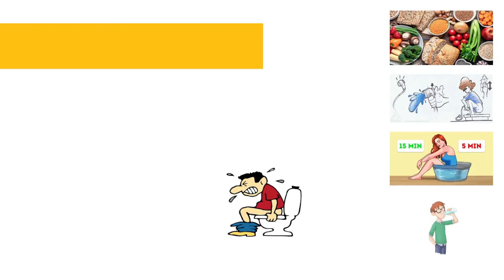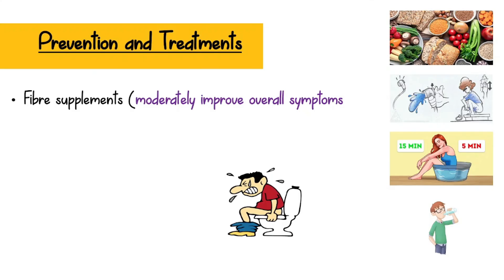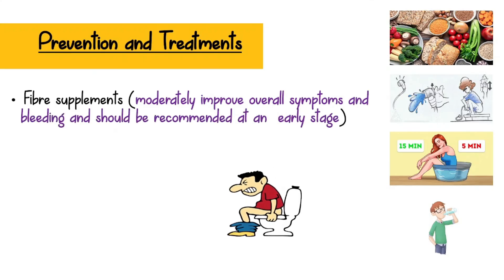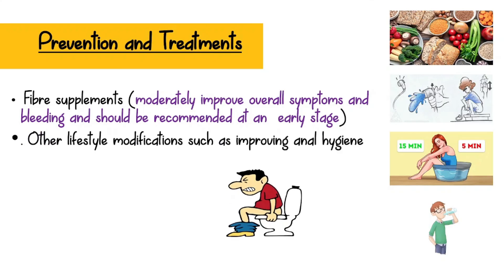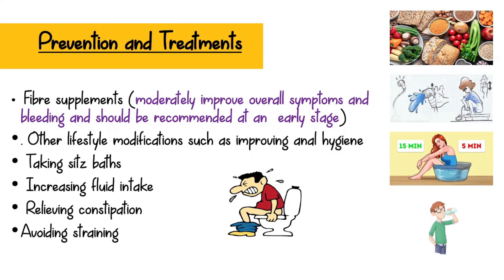Prevention and treatments: fiber supplements moderately improve overall symptoms and bleeding and should be recommended at an early stage. Other lifestyle modifications such as improving anal hygiene, taking sitz baths, increasing fluid intake, relieving constipation, and avoiding straining are used in primary care and may help in the treatment and prevention of hemorrhoids. Surgeries have to be done in serious hemorrhoids.